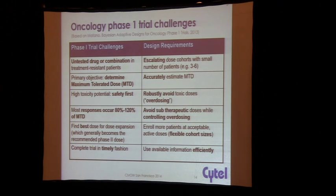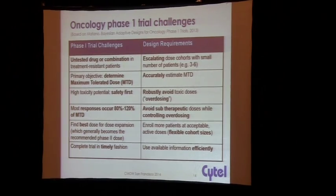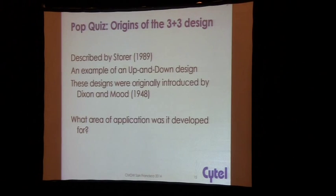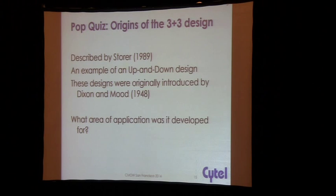There's always the imperative of doing this in a timely and efficient manner, which makes for a very challenging set of requirements for these designs. Most designs in Phase 1 oncology have been 3+3 to date, and I've got a few slides to show you the prevalence of these designs. This design was originally described by Storer in 1989 and is an example of a broader class called up-and-down designs, originally introduced by Dixon and Mood in 1948.